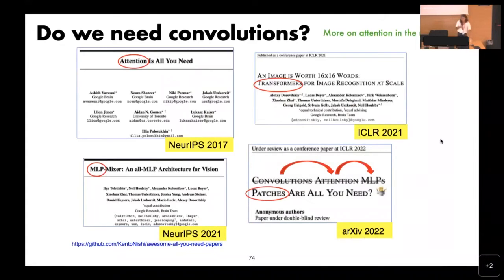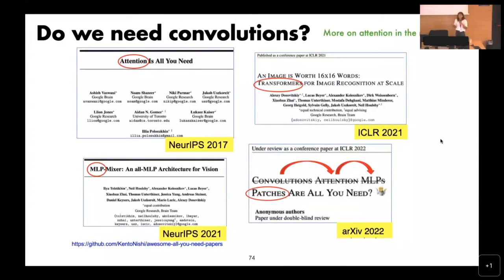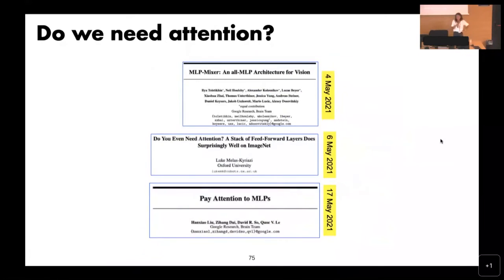I talked a lot about convolutions and showed a very standard old model. Just be aware — and the next talk will cover this more — there has been recent questioning: do we even need convolutions? If you have enough data, can we go to more complex models? The advantage of convolution is reducing parameters. There's been hype moving from convolutions to attention, then questioning attention, going back to MLP (multilayer perceptron) basics, then not convolutions, not attention, not MLP — just patches. MLPs were even shown to outperform both attention and convolutions.